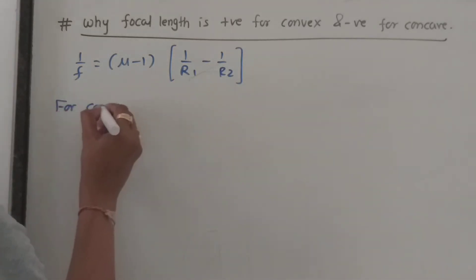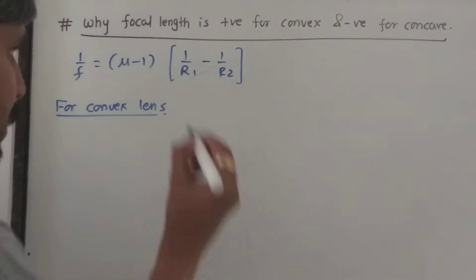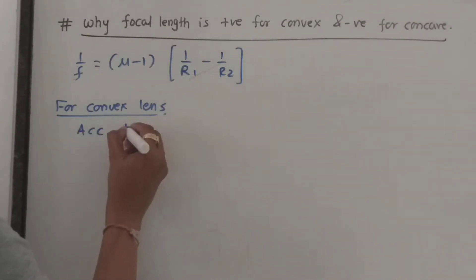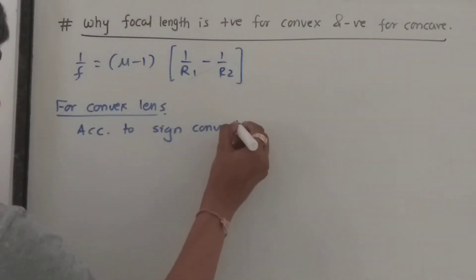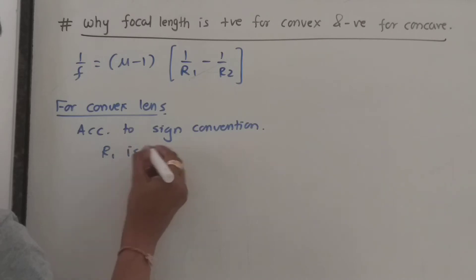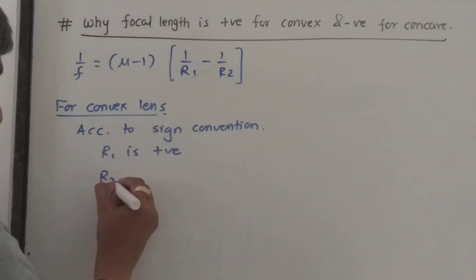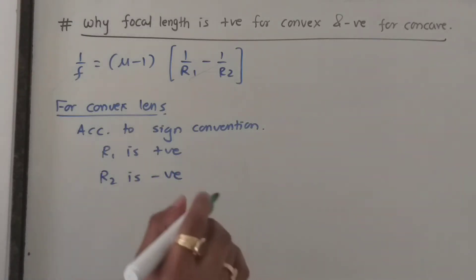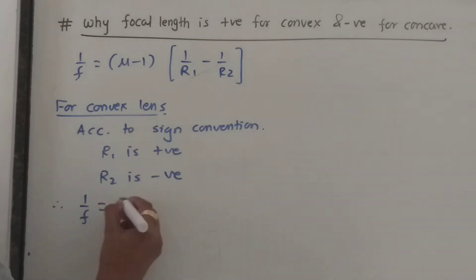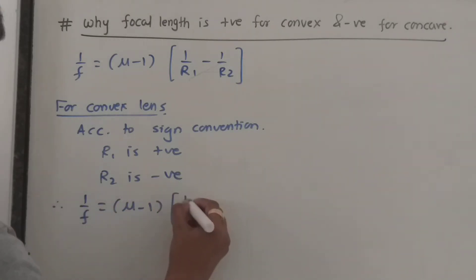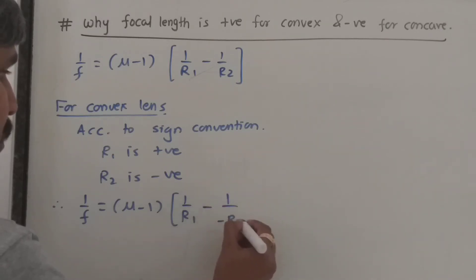For a convex lens, according to sign convention, your R1 is positive and R2 is negative. So I will substitute the values: 1 upon f is equal to mu minus 1, multiplied by 1 upon R1 minus 1 upon negative R2.